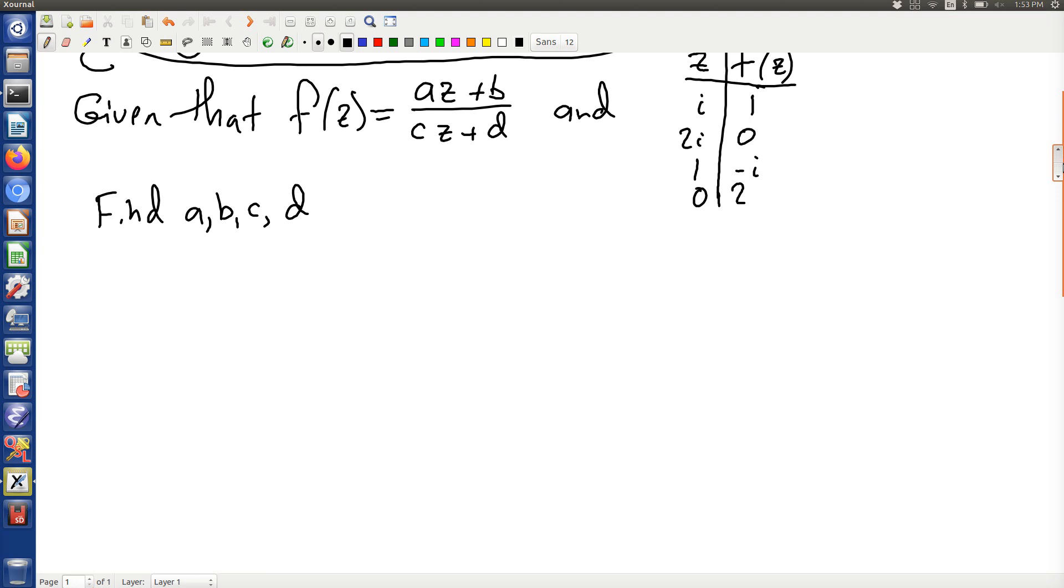Let's substitute in the first point, this point here. What is that? That is A times i plus B over C times i plus D is equal to 1. That's the first point.